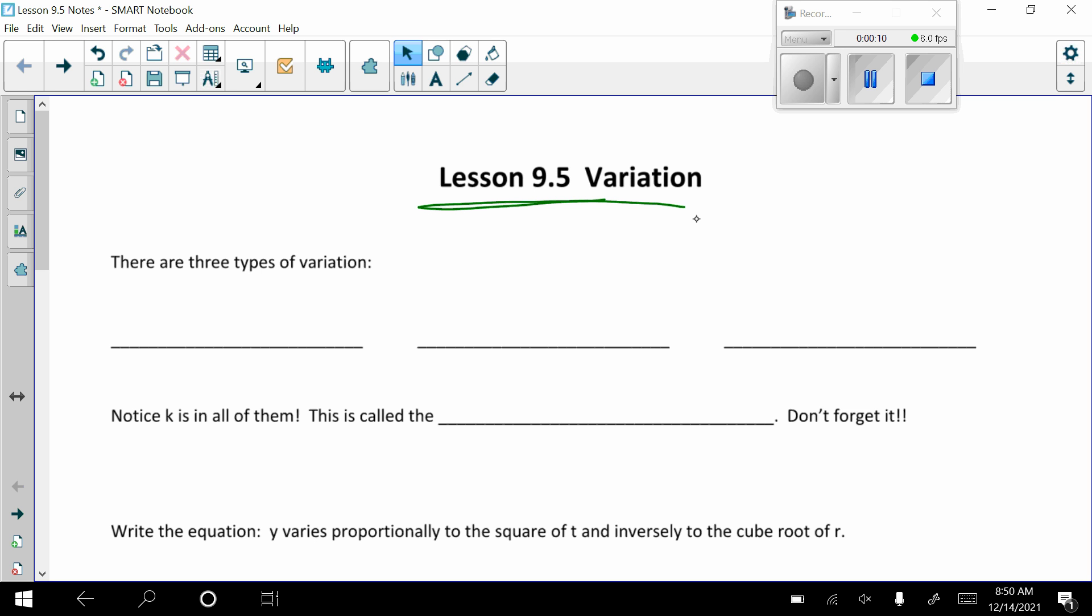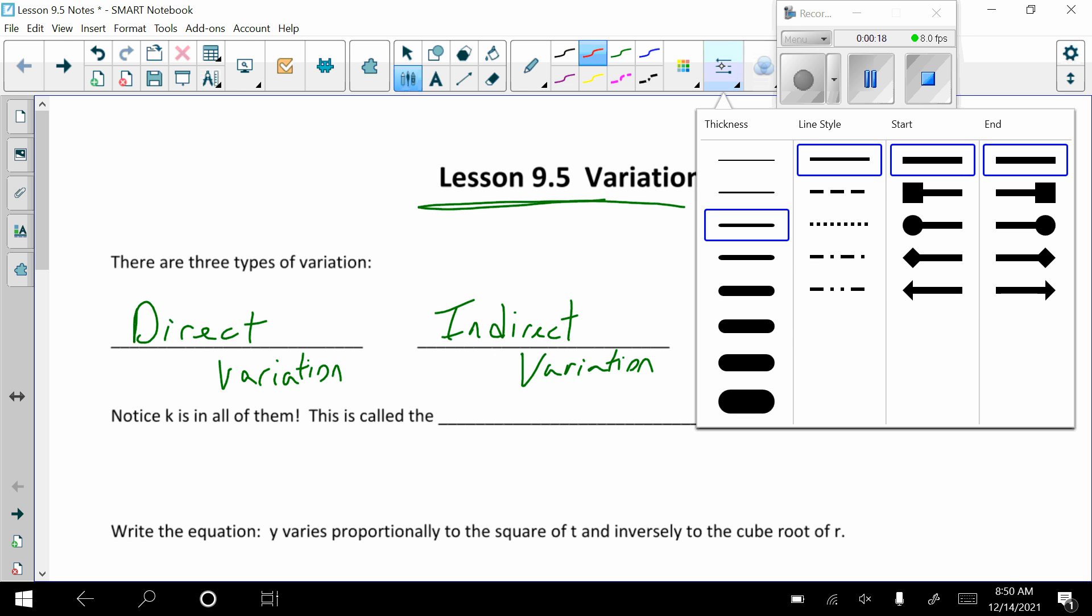So there's actually three types: direct, indirect, and joint variation. And each of them comes with their own equation, so I'm going to go ahead and write that down.